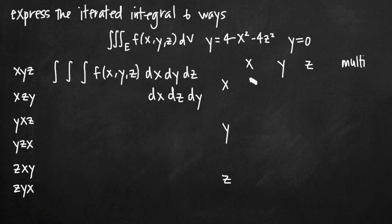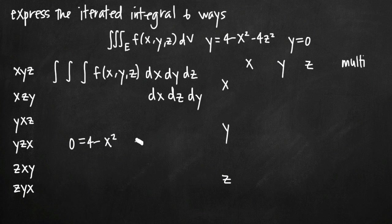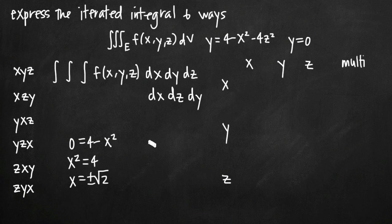To find constant limits of integration for x, I plug in 0 for y and 0 for z into the equation y = 4 - x² - 4z². I get 0 = 4 - x², so x² = 4, and taking the square root I get x = ±√2. There's no y or z involved — just real numbers. These are my constant limits of integration for x: positive and negative √2.